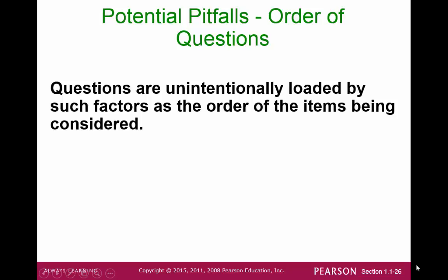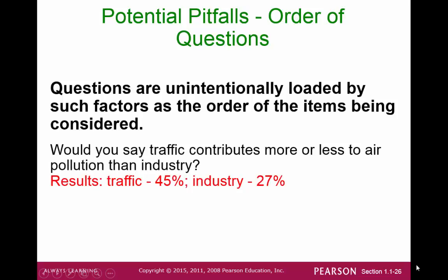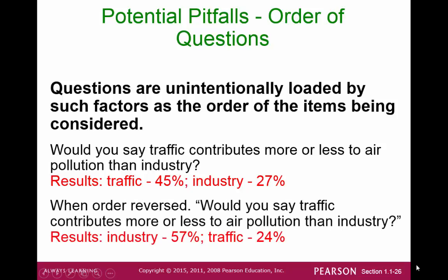Another potential pitfall is the order of questions in your survey. Questions may unintentionally be loaded if earlier questions influence later ones. For example, asking whether traffic or industry contributes more to air pollution — if traffic is listed first then industry, you might get 45% traffic and 27% industry. Reversing the order could produce a slightly different result.